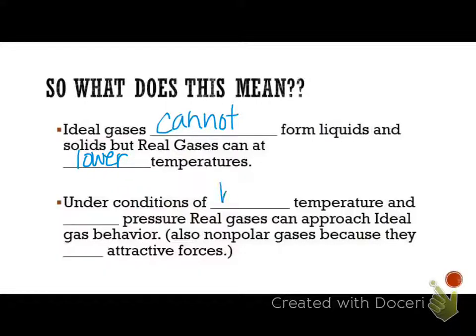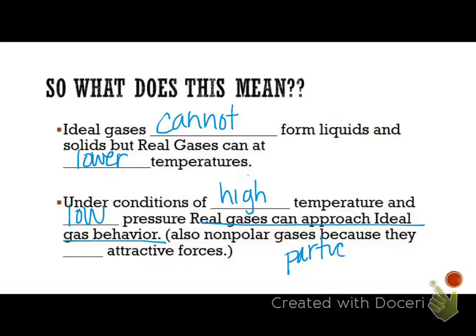Under conditions of high temperature and low pressure, real gases can approach ideal gas behavior. That's because basically at these conditions, the particles are very far apart. And so when the particles are far apart, that means there's less attraction for them to be able to form and they behave more like an ideal gas.